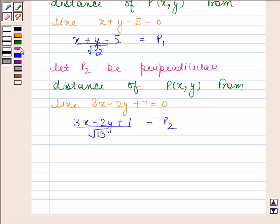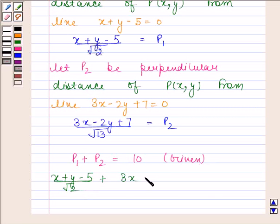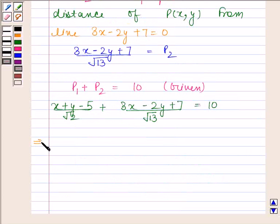Given in the question that P₁ + P₂ = 10, let's substitute the values of P₁ and P₂. We have (x+y-5)/√2 + (3x-2y+7)/√13 = 10. Multiplying through: √13(x+y-5) + √2(3x-2y+7) = 10√26.